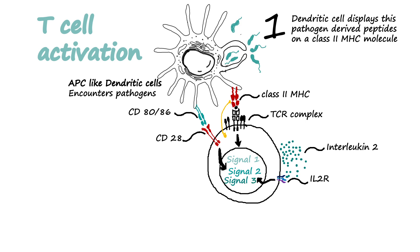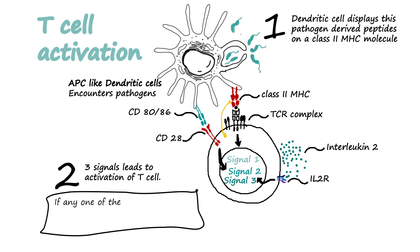This works like a combination lock — you need three digits aligned properly for the lock to open. All three signals must be present for T cell activation. The second signal is the CD80/CD86 and CD28 interaction, and the third is the autocrine signaling by IL-2 receptors. If any one of these signals is not present, activation would not happen optimally.